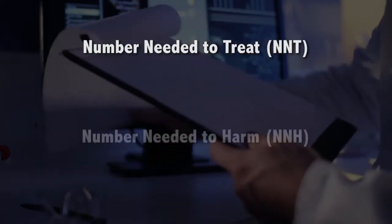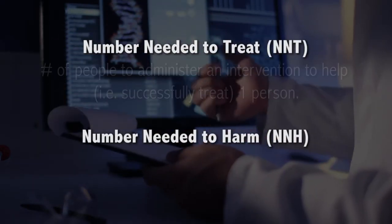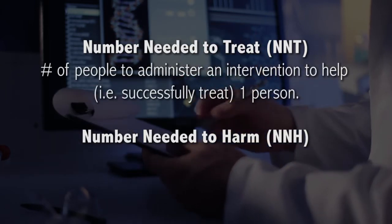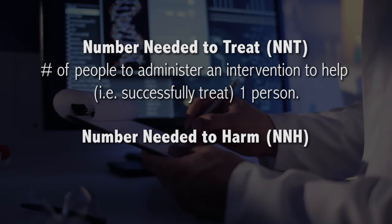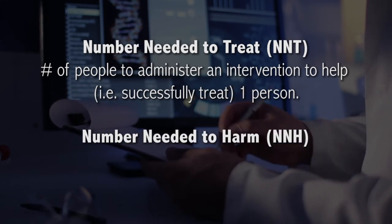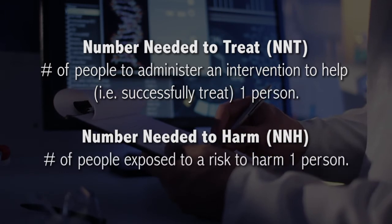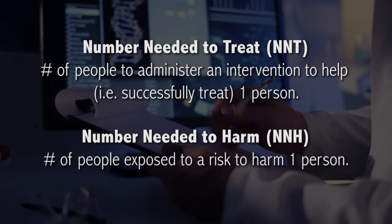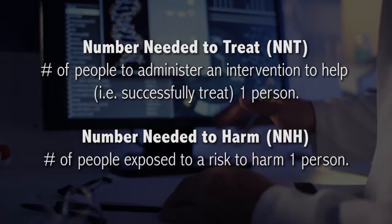Related to the absolute and relative risks are measurements called the number needed to treat and number needed to harm. The former is how many people we'd have to administer a specific intervention to in order to help one person, whether it save a life, prevent a disease, and so forth. The latter is how many people would have to be exposed to a certain risk to produce harm, again whether take a life, cause a disease, etc.